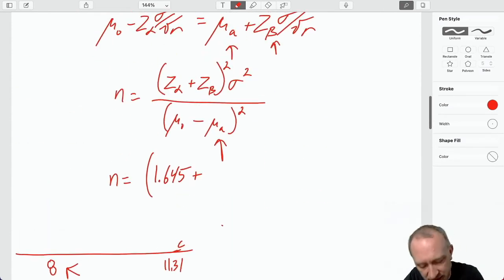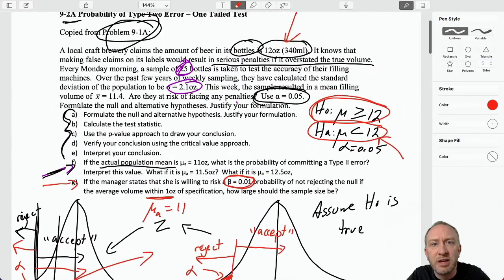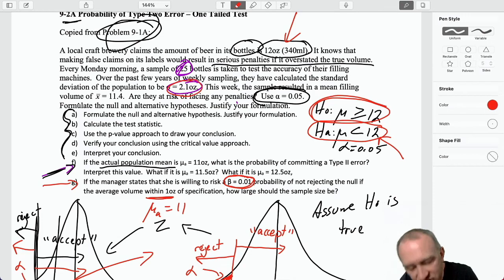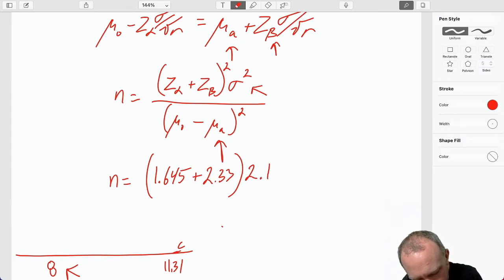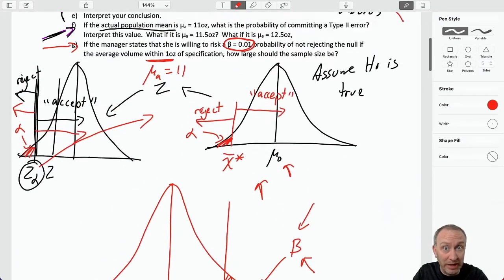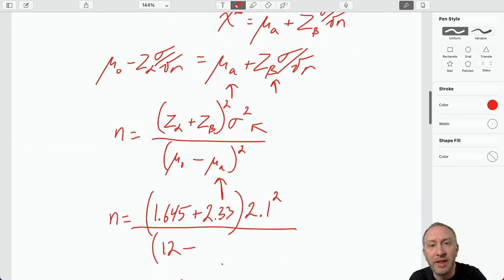So, I come back up here. There's 2.33 squared. Our variance from this exercise is given to us here. We have our standard deviation is 2.1. So, that's going to be 2.1 squared divided by the difference between our hypothesized value and this value that we are comfortable with at the 1% chance, right? 1 ounce within from specification. So, that's the 11.